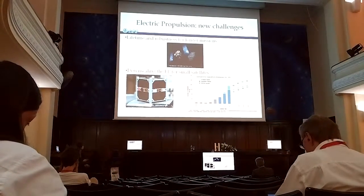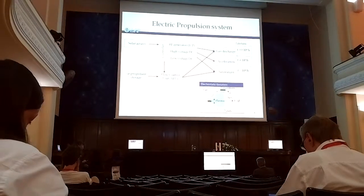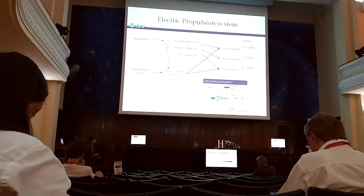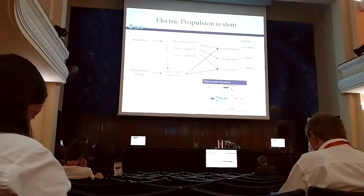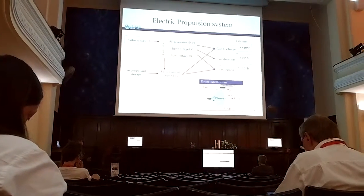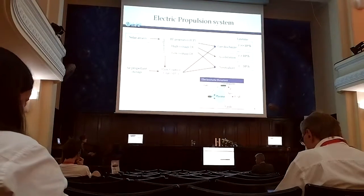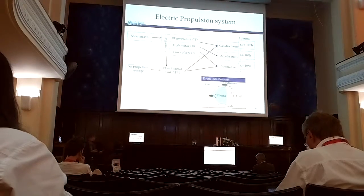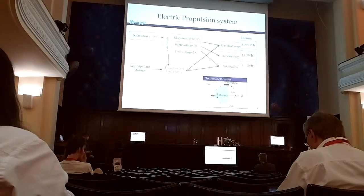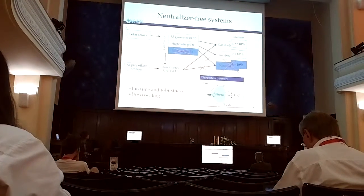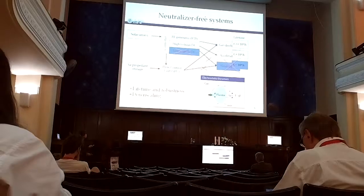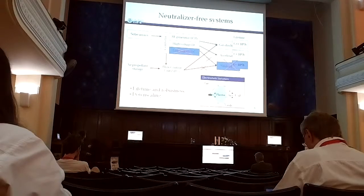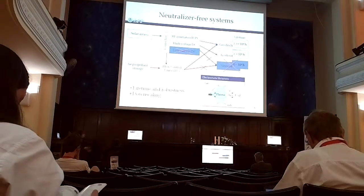But there is a problem that we cannot easily downscale this propulsion system. There is nothing that we can just use right now, nothing efficient at least, electric propulsion for very small systems. Because you have a lot of subsystems here, because the neutralizer is extremely complicated to downscale, and for smaller systems, you usually have a thruster, and you have the same size neutralizer. So you have kind of two thrusters, and it's quite complicated to use this system.